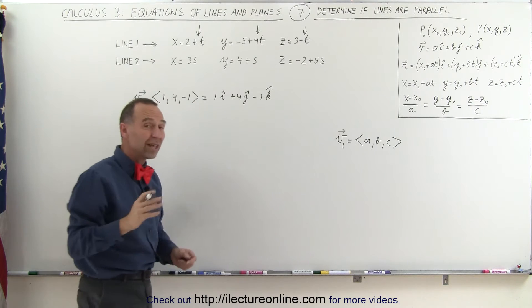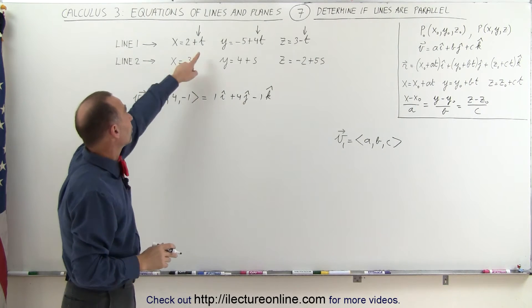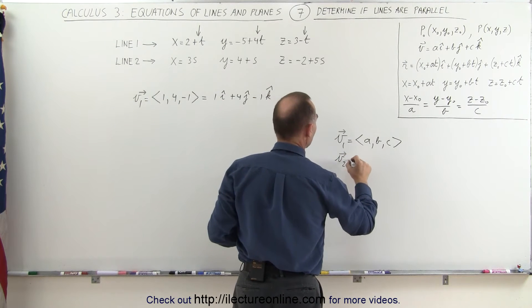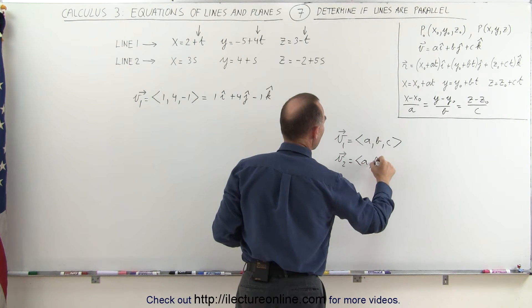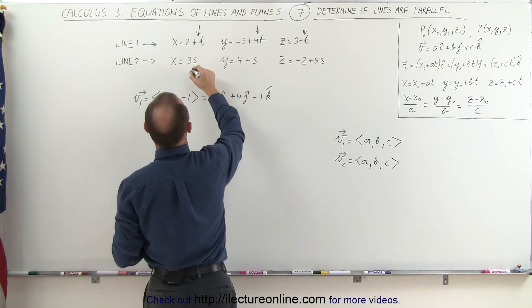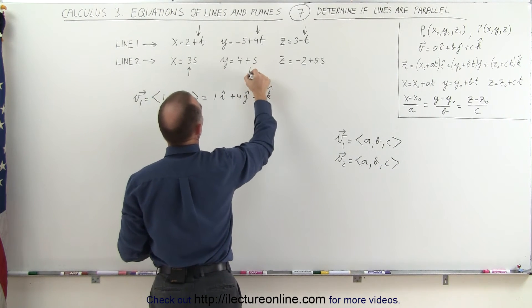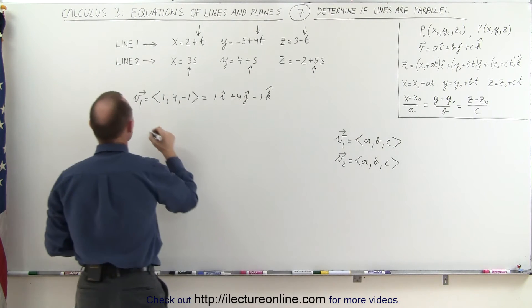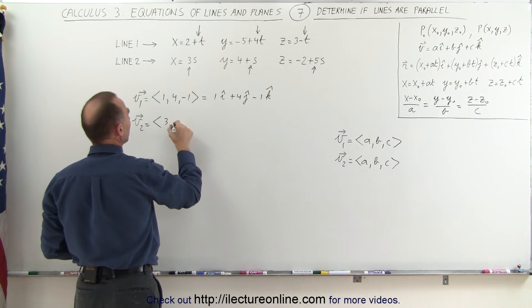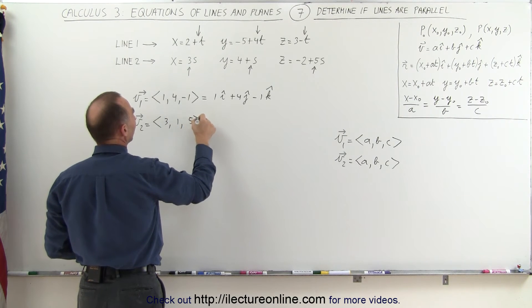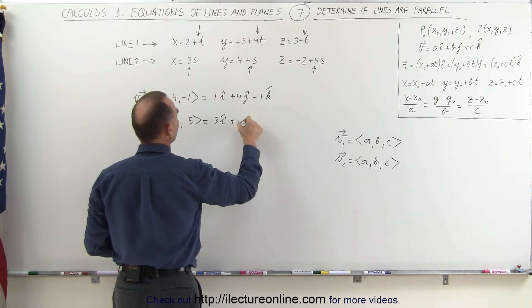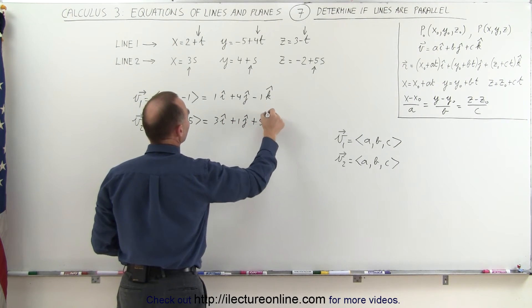We can do the same for the second vector. Notice that instead of using T, we used S as the parameter. But again, we can say that V2 is equal to A, B, and C of the second line. A, B, and C can be found: that would be the 3 here, the 1 there, and the 5 over there. Which means that V2 equals the vector 3, 1, and 5, which can be written as 3 in the I direction, plus 1 in the J direction, plus 5 in the K direction.